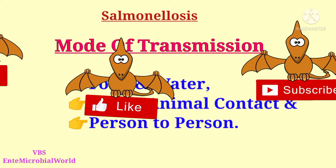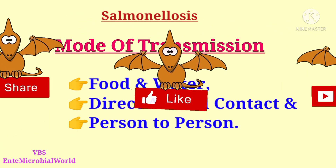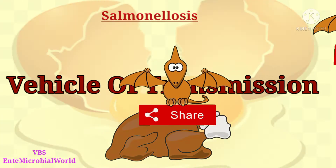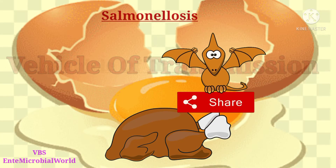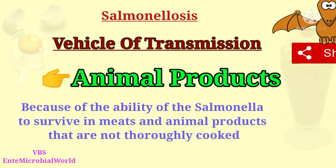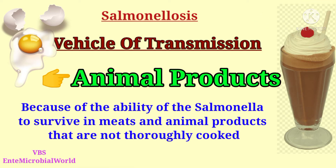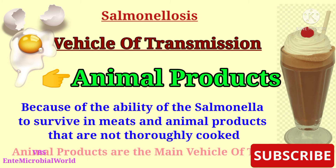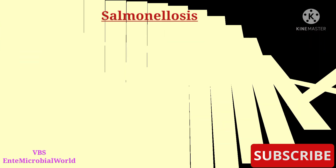The route of entry is the fecal-oral route. Mode of transmission includes food and water, direct animal contact, and rarely person to person. The main vehicle of transmission is animal products, because of the ability of salmonella to survive in meats and animal products that are not thoroughly cooked.